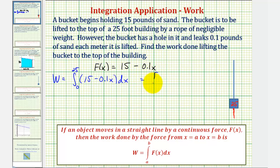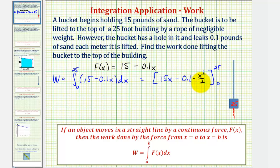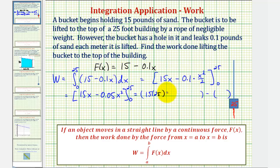We find the anti-derivative: 15x minus 0.1 times x squared divided by 2. We evaluate this at 25 and then at 0 and find the difference. Simplifying, 0.1 divided by 2 gives 0.05, so we have 15x minus 0.05x squared. When x is 25 we have 15 times 25 minus 0.05 times 25 squared. When x is 0 both terms are 0.